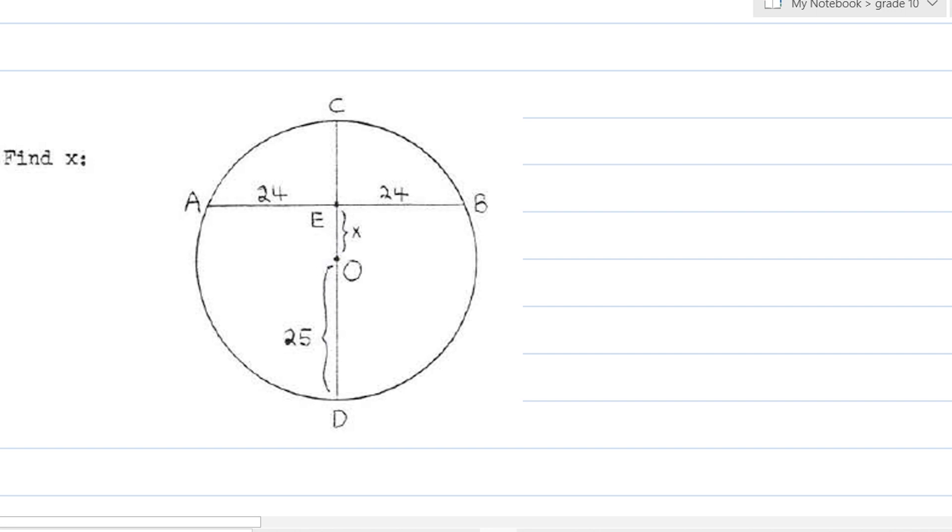Now, to solve for the value of X, let's construct OB. OB, which is a radius. O is the center. We connected it to one point on the circle. So this is a radius. And we have also a radius here, which is OD. OD is also a radius. And it's 25 units. So therefore, this is also 25 units.